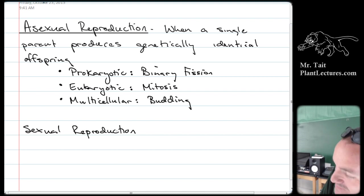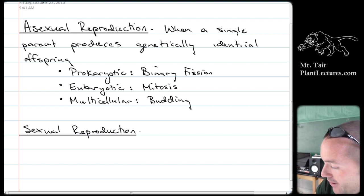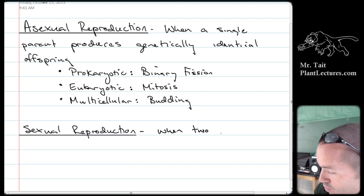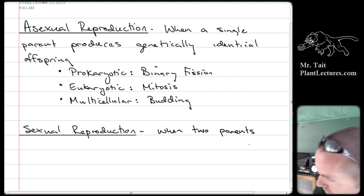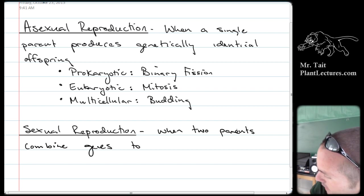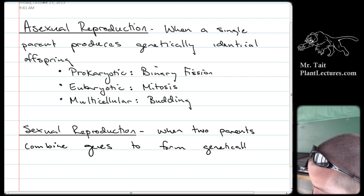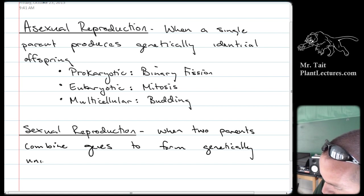Sexual reproduction is when two parents — or parent cells — combine genes to form genetically unique offspring.